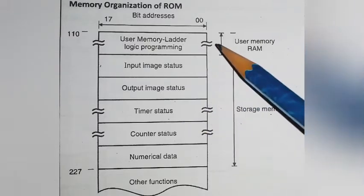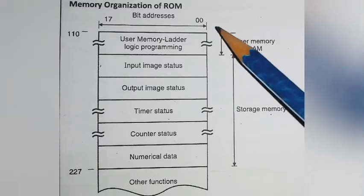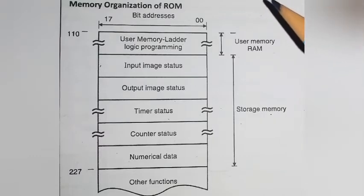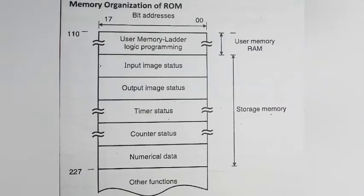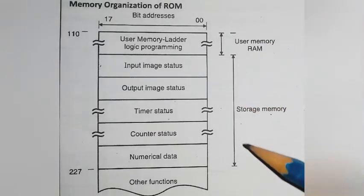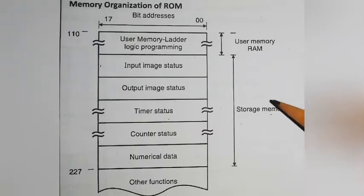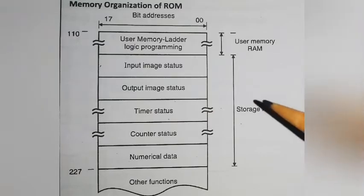Volatile and non-volatile memory are the two types of memory used in PLC. Non-volatile memory is generally used for storing user programs so that programs can be retained during power failure. The different types of memory generally used in PLCs are RAM and ROM.